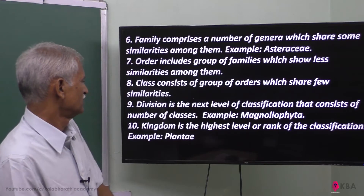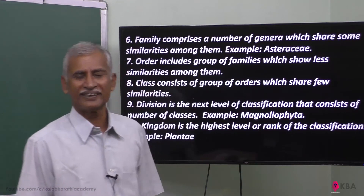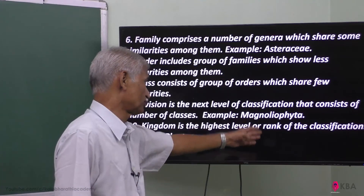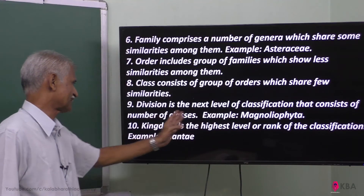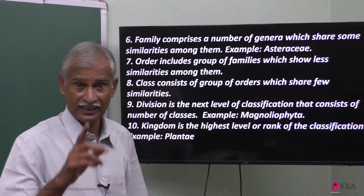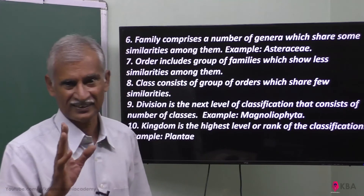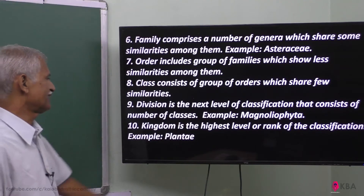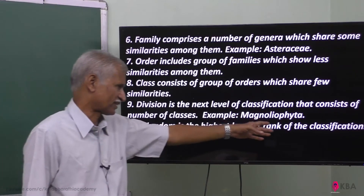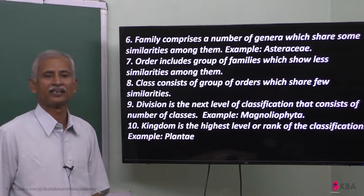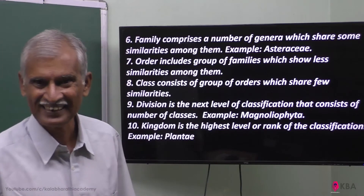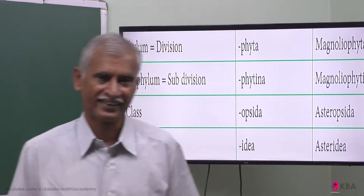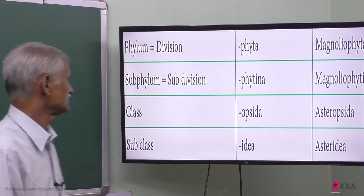Then comes division, the next higher level of classification that consists of a number of classes. For example, division Magnoliophyta — that is the angiosperms — all flowering plants come under Magnoliophyta. In plant classification we call it division, whereas in zoology we call it phylum. The topmost rank of classification is the kingdom — Plantae. All the plants, without difference, come under Plantae.